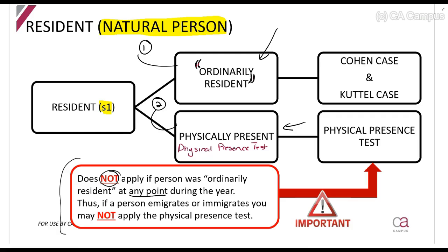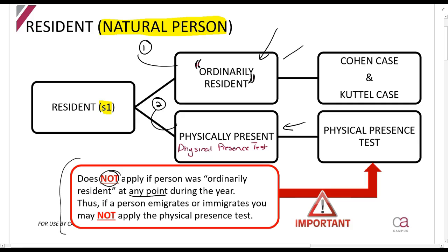For example, a person who emigrated — who is leaving the country — would have been a resident for at least a day or two in South Africa before they left, so you can't apply the physical presence test. Similarly, a person coming into South Africa who immigrated was a resident for only part of the year. Because they were ordinarily resident for at least a day, you cannot apply the physical presence test.